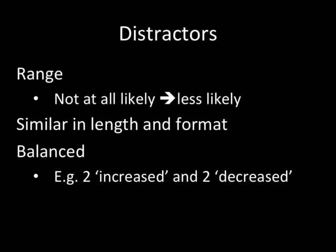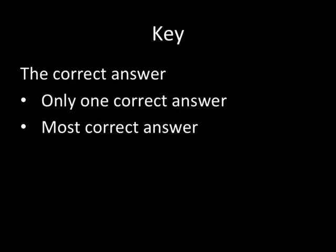The distractors should all be similar in length and format, and they should be balanced. For example, if two answers use the word 'increased,' you want two that use the word 'decreased.' The key is the correct answer, which you can identify when submitting to an exam board with an asterisk, or by writing 'key equals A' underneath. It may be the only correct answer, or in some cases it is the most correct answer when the others are possible but significantly less likely — and this depends on how you phrase your lead-in.